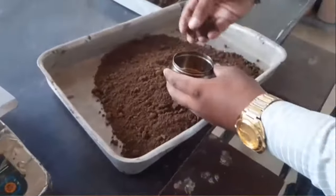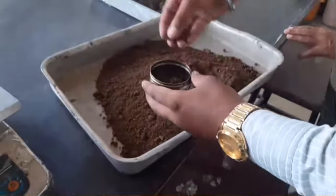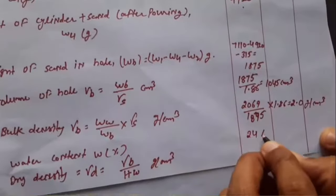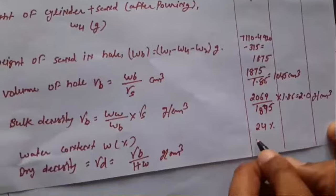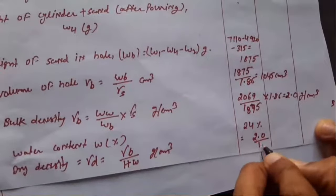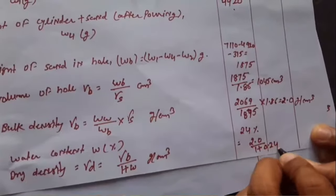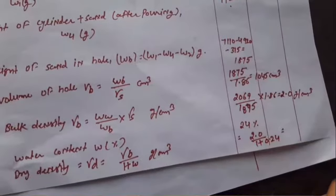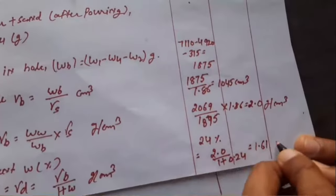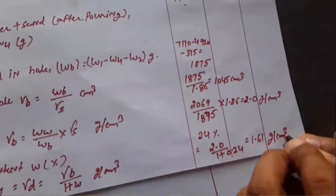Now calculate the moisture content by the standard procedure — collect the sample and put it in the oven for 24 hours. In our case the value comes out to be 24%. The dry density is bulk density divided by (1 + water content), which comes out to be 1.61 grams per cm³.